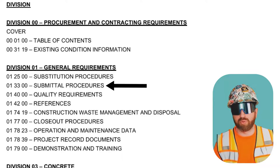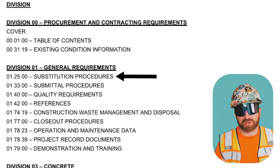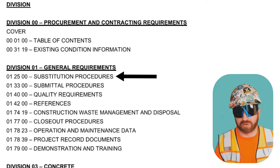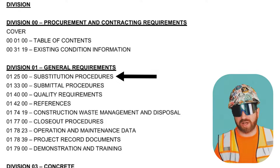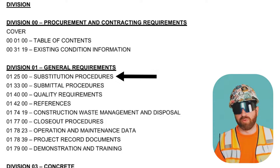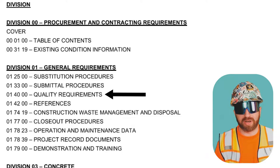Architects and engineers can approve or reject submittals if they are not in alignment with all of the specifications. Substitution procedures — as a contractor, you might not have access to a product due to market volatility or unavailability of some material. This section outlines the procedures for submitting on material outside of the required specifications for approval. Quality requirements — pretty self-explanatory.